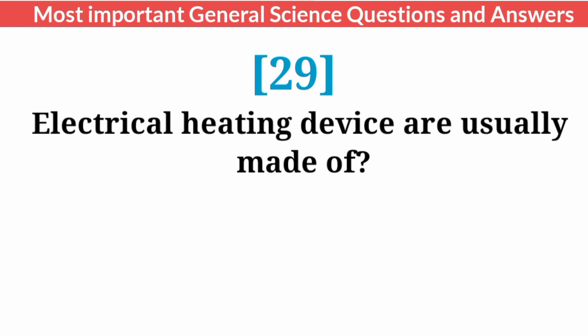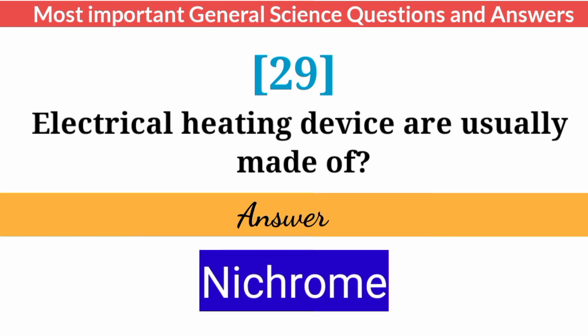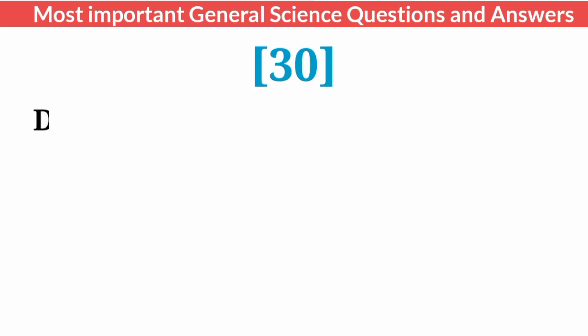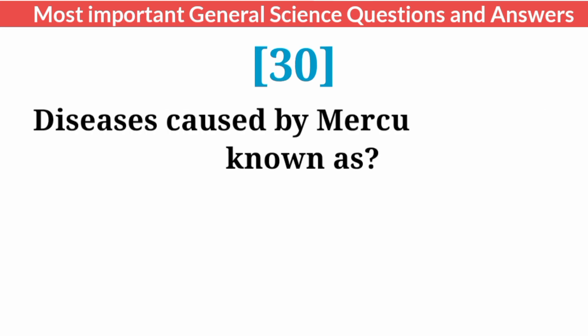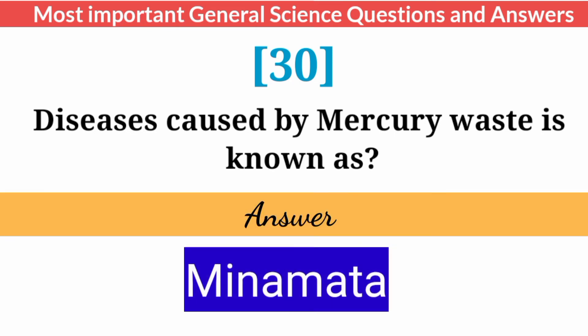Electrical heating devices are usually made of? Answer: Nichrome. The disease caused by mercury waste is known as? Answer: Minamata.